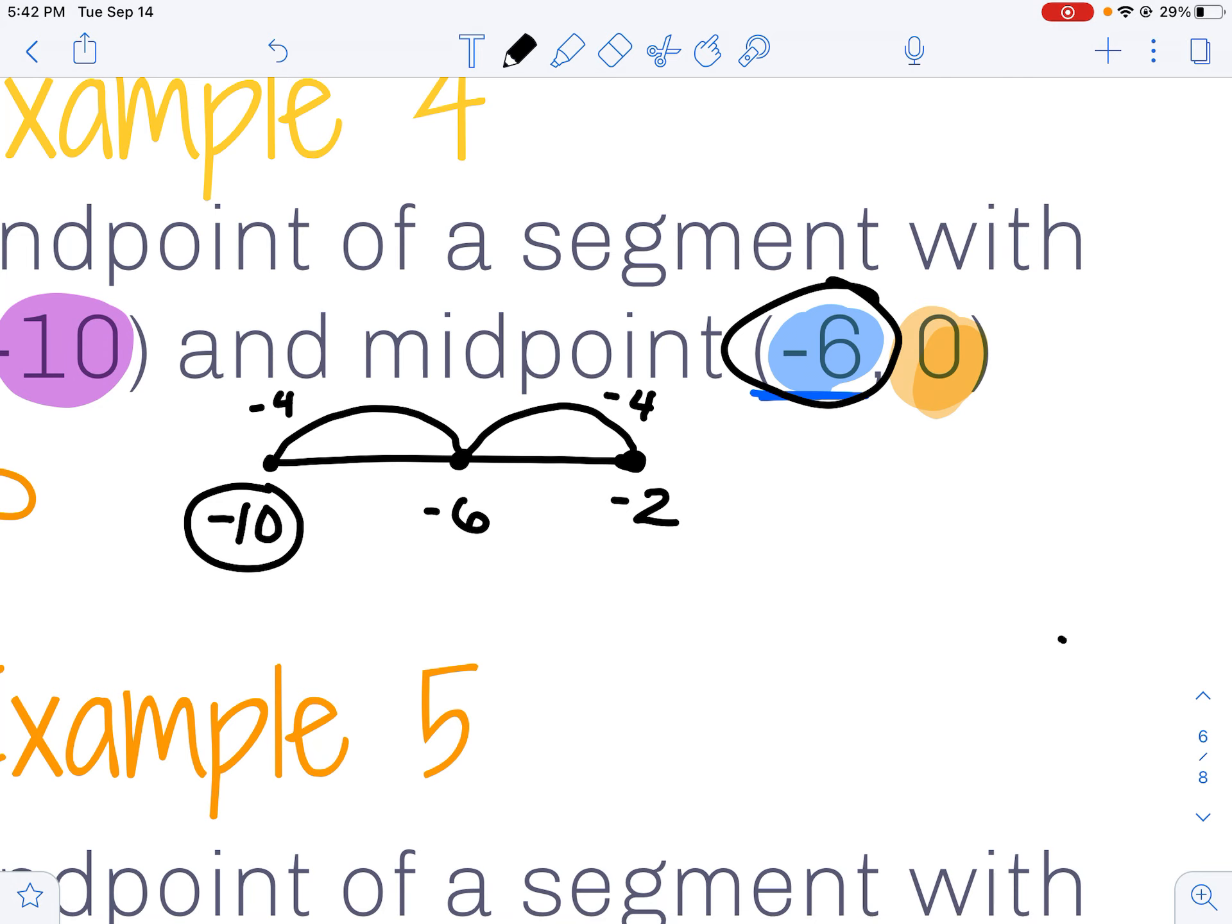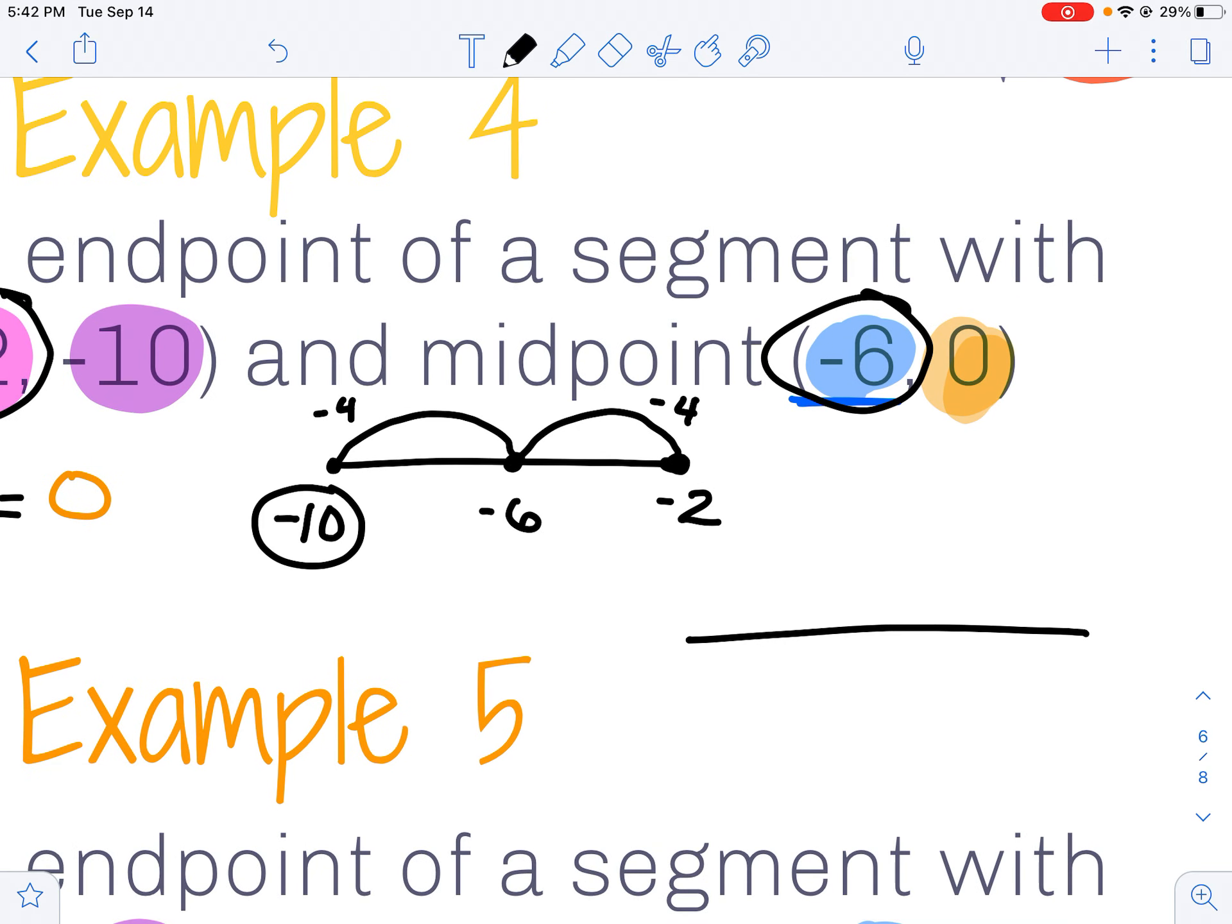I can follow that same strategy for my y value. This time my endpoint started at negative 10. My midpoint was at 0. Well, to get from negative 10 to 0, I must have added 10.